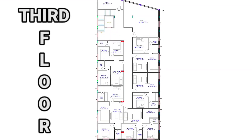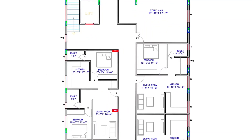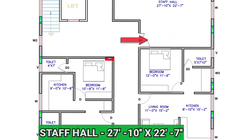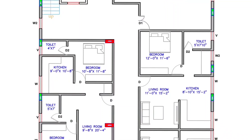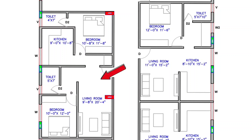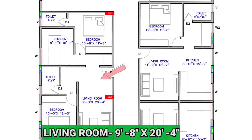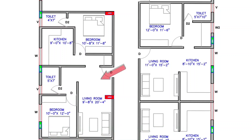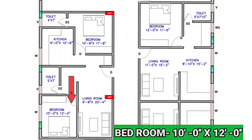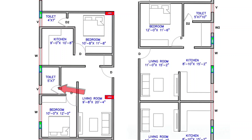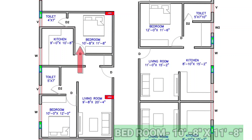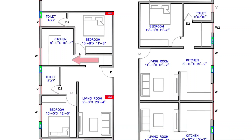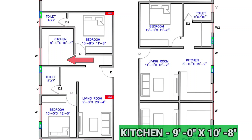This is the map of the third floor. After reaching the third floor from the staircase or lift, on the right-hand side there is a store-all sized 27 feet 10 inches by 22 feet 7 inches. Going straight toward the passage on the left-hand side, there is a living room sized 9 feet 8 inches by 20 feet 4 inches. On the left side of the living room, there is a bedroom sized 10 feet by 12 feet. Inside the living room, there is a toilet sized 5 feet by 7 feet. On the straight of the living room, there is another bedroom sized 10 feet 8 inches by 11 feet 8 inches. On the left side of that bedroom, there is a kitchen sized 9 feet by 10 feet 8 inches.